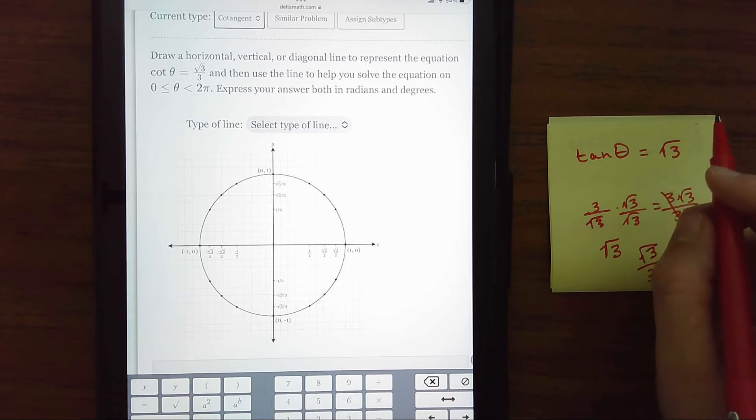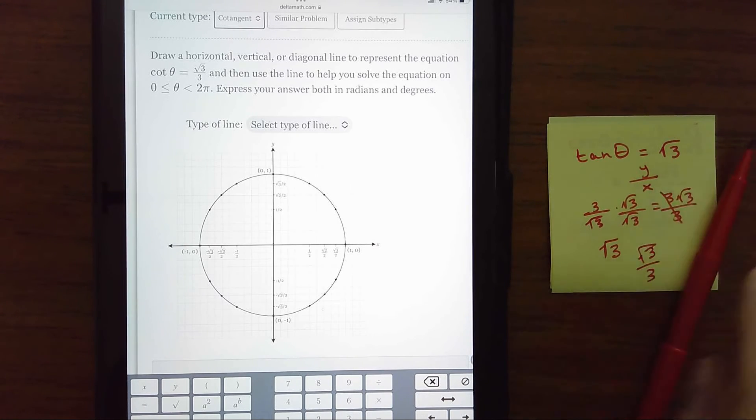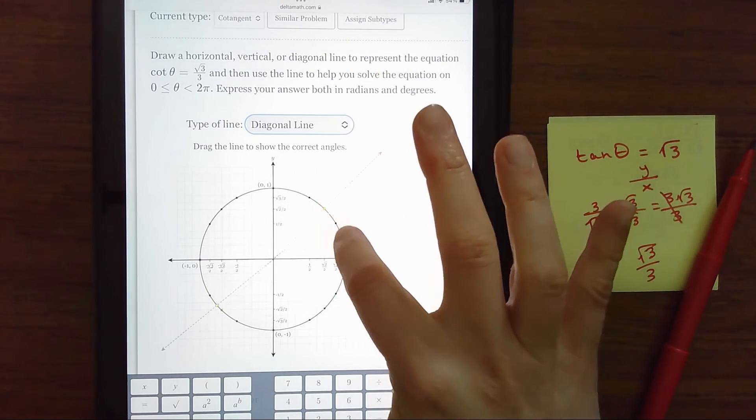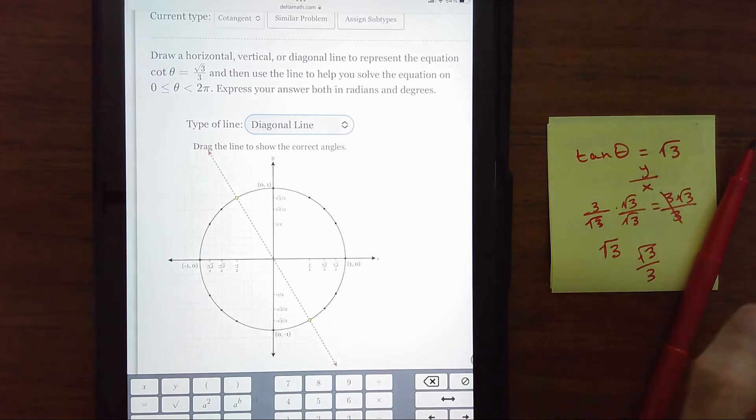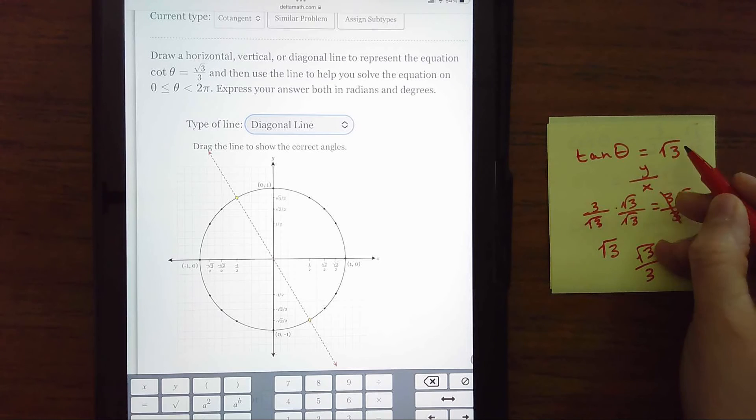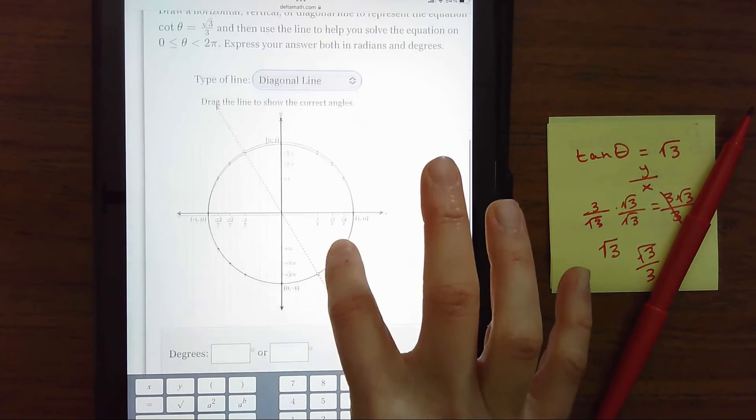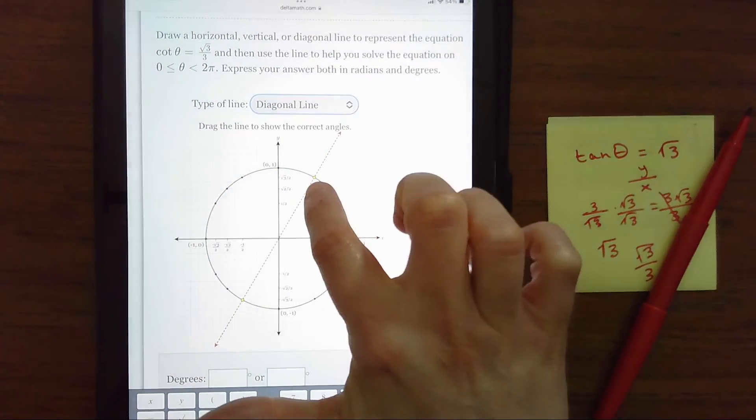Remember tangent's the hardest one because it's a Y over X relationship. So we want to pick a diagonal line and they don't give us values. We have to know what's happening. And so what I would like to think is for one, I have this memorized. I know what angle tangent is square root of three. It's a 60 degree angle.